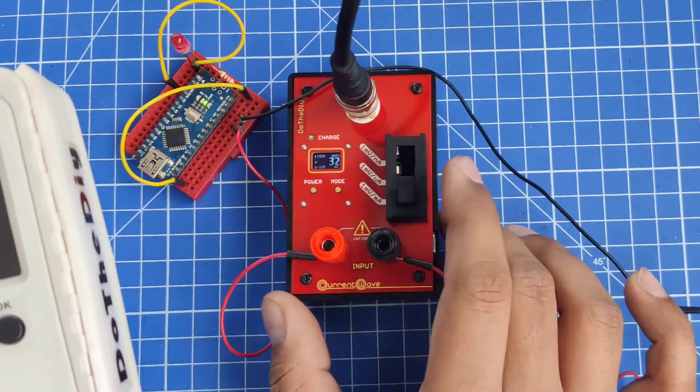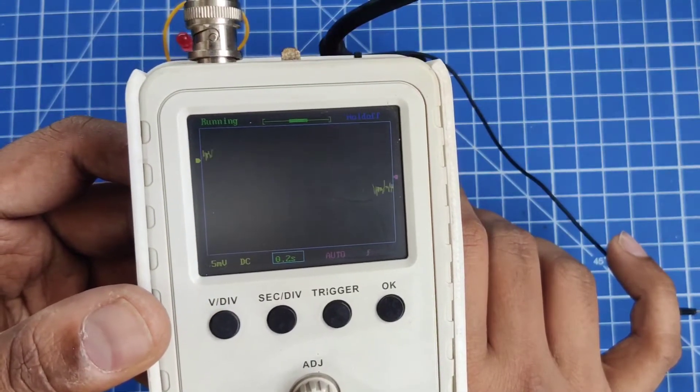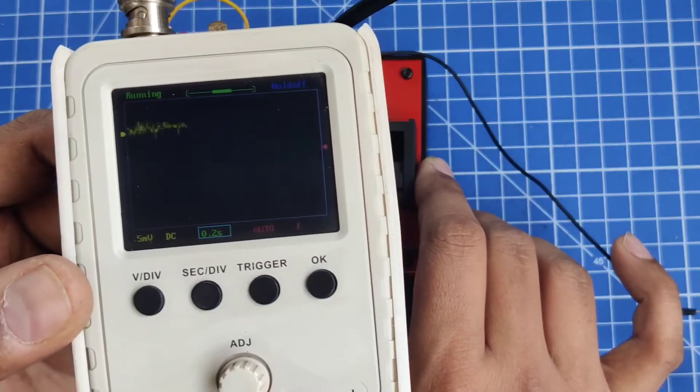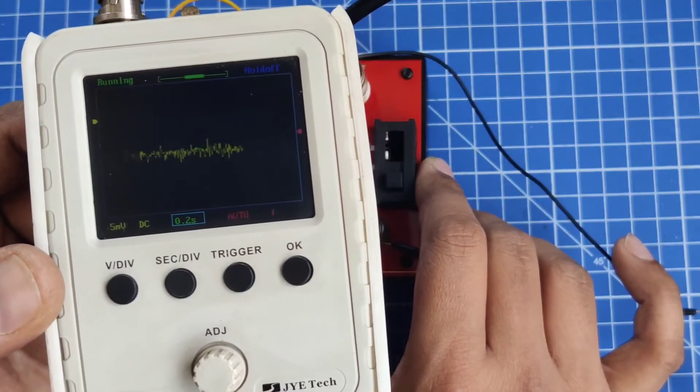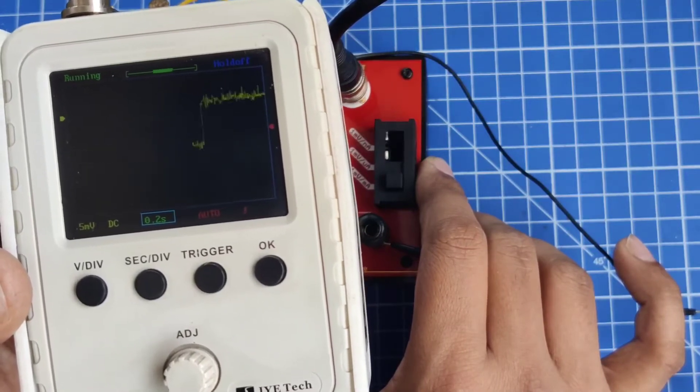I've connected this oscilloscope here. This LED is blinking at 2 seconds, 2 seconds on and 2 seconds off, and you can see the current consumption can be seen on the DSO also now.